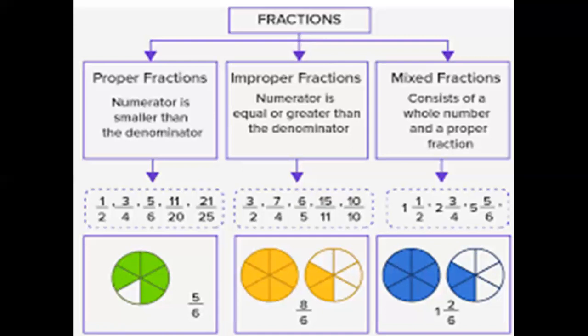You can see two circles, each with six equal parts. In the first circle all six parts are shaded, and in the second circle two parts are shaded. So the total shaded parts are six plus two, which equals eight, and the denominator (total equal parts per circle) is six. This gives us eight by six — an improper fraction because eight is greater than six.